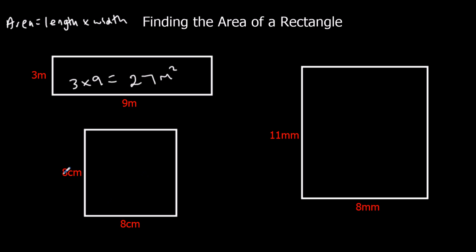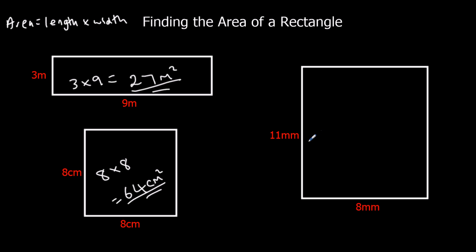The one down here is a square — we've got eight times eight. Eight times eight is sixty-four, and that's centimetres squared. And here we've got eleven times eight. Eleven times eight is eighty-eight, and that's in millimetres squared.